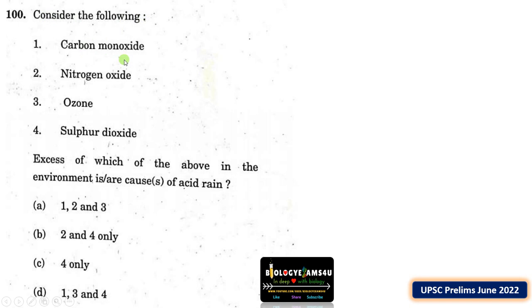Consider the following: carbon monoxide, nitrogen oxide, ozone, sulfur dioxide. Excess of which of the above in the environment are causes of acid rain? Options are A: 1, 2 and 3; B: 2 and 4 only; C: 4 only; D: 1, 3 and 4 only.